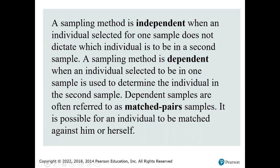A sample is dependent when the individuals selected in one are used to determine the individuals in the second sample. So I pick all these first people randomly, but the second person has to be a sibling or a spouse — there's a relationship. Or I pick the first person, and the second has to be living in the same town. You can also use yourself with a pre and a post, also called matched pairs.